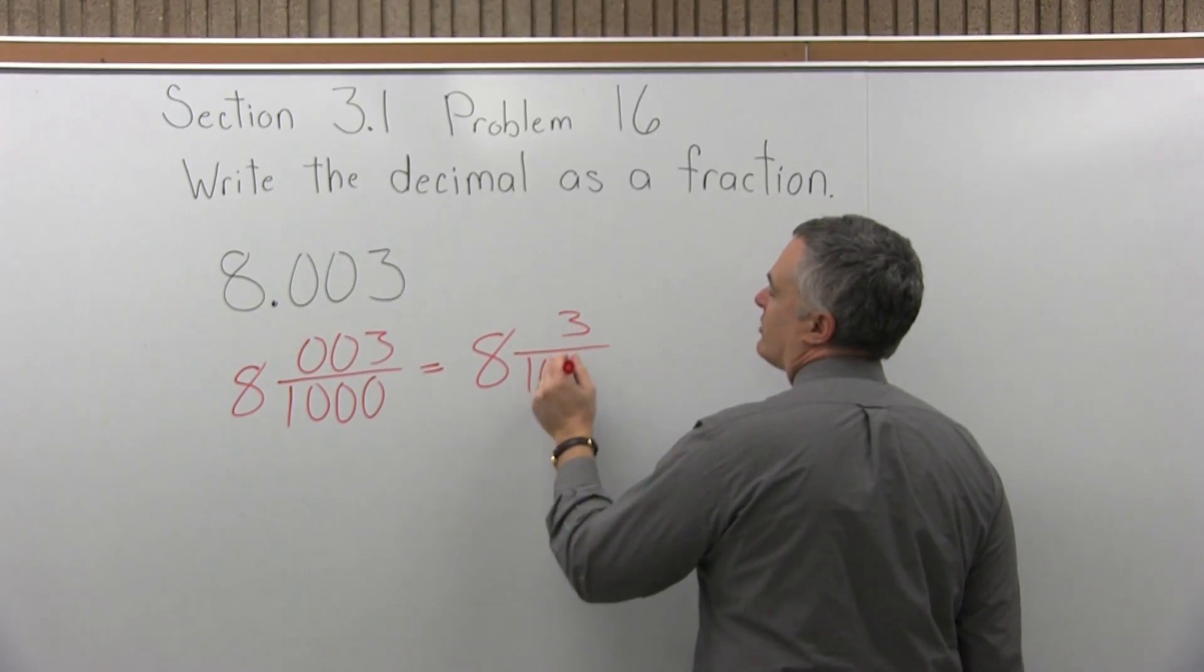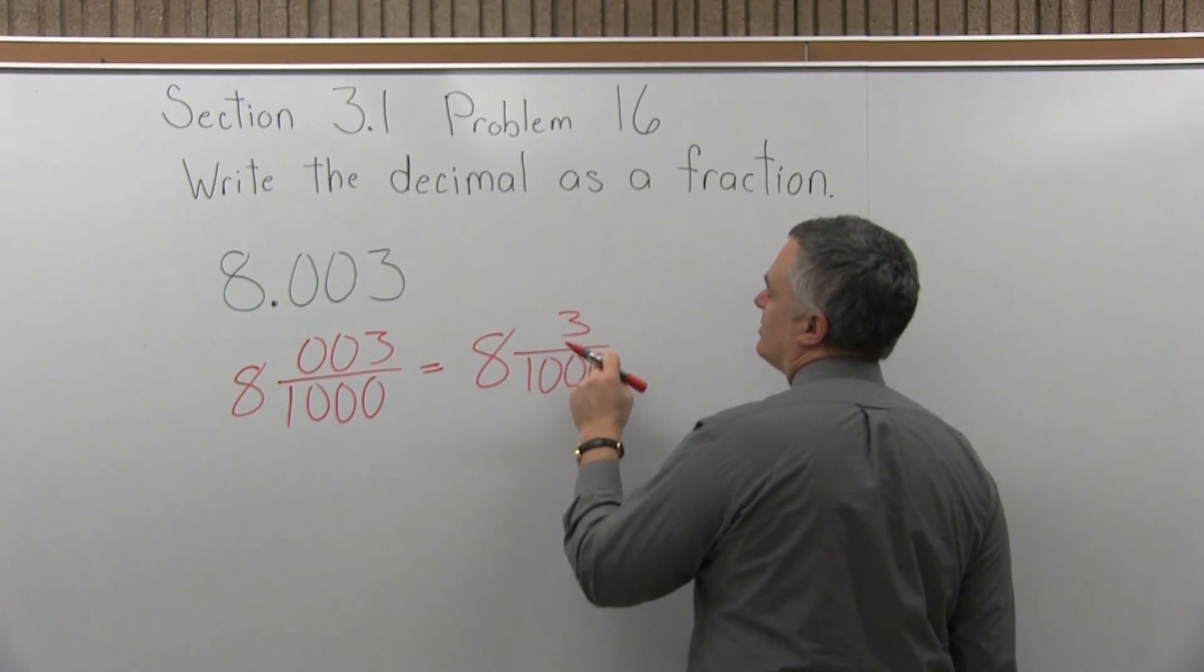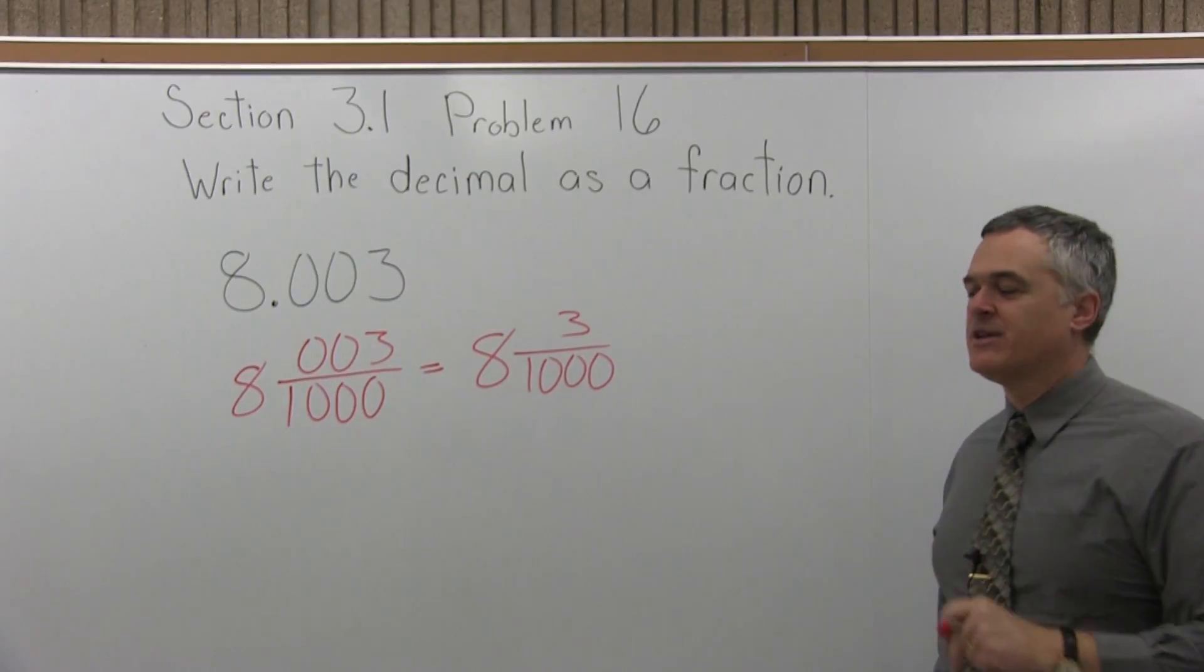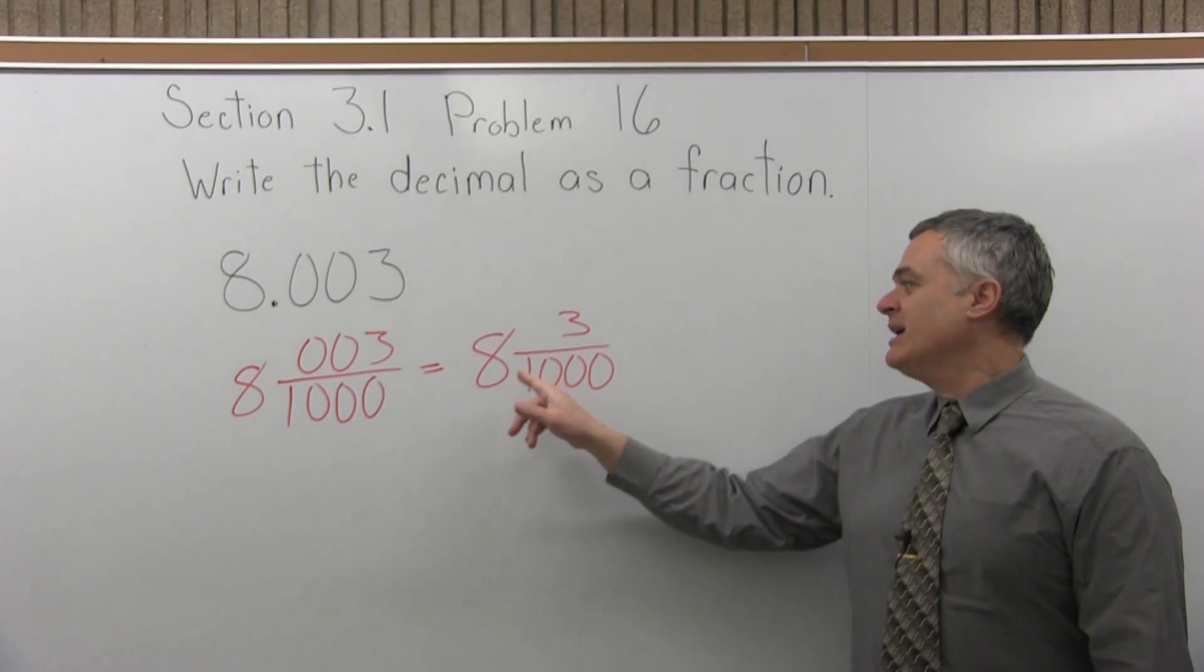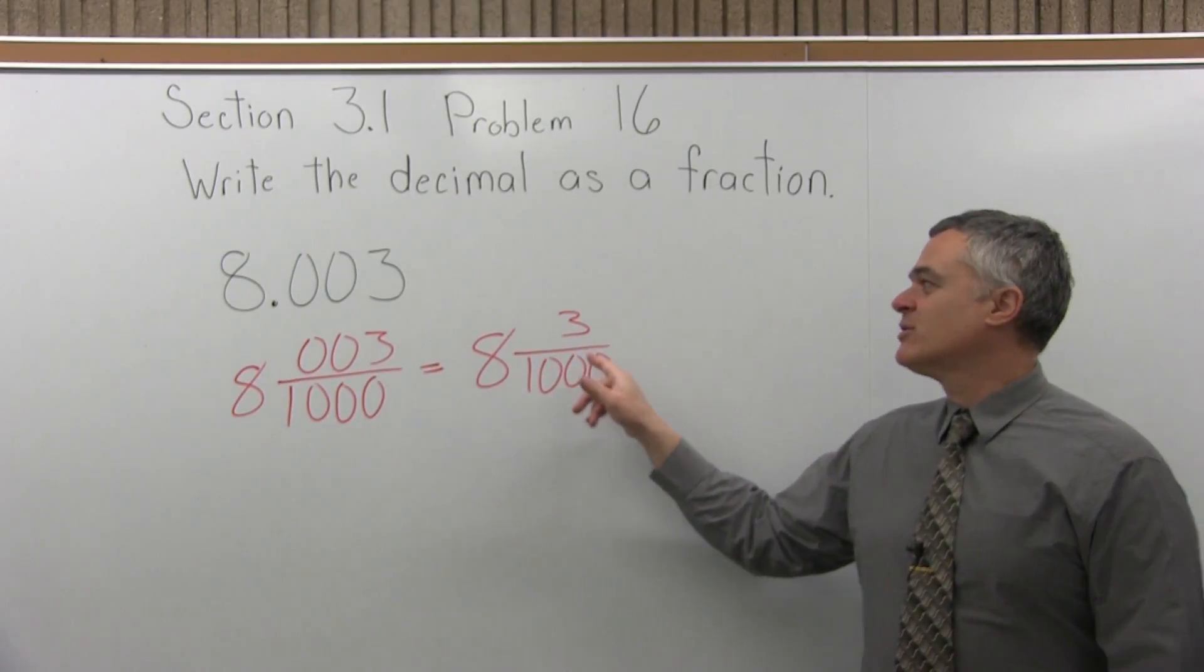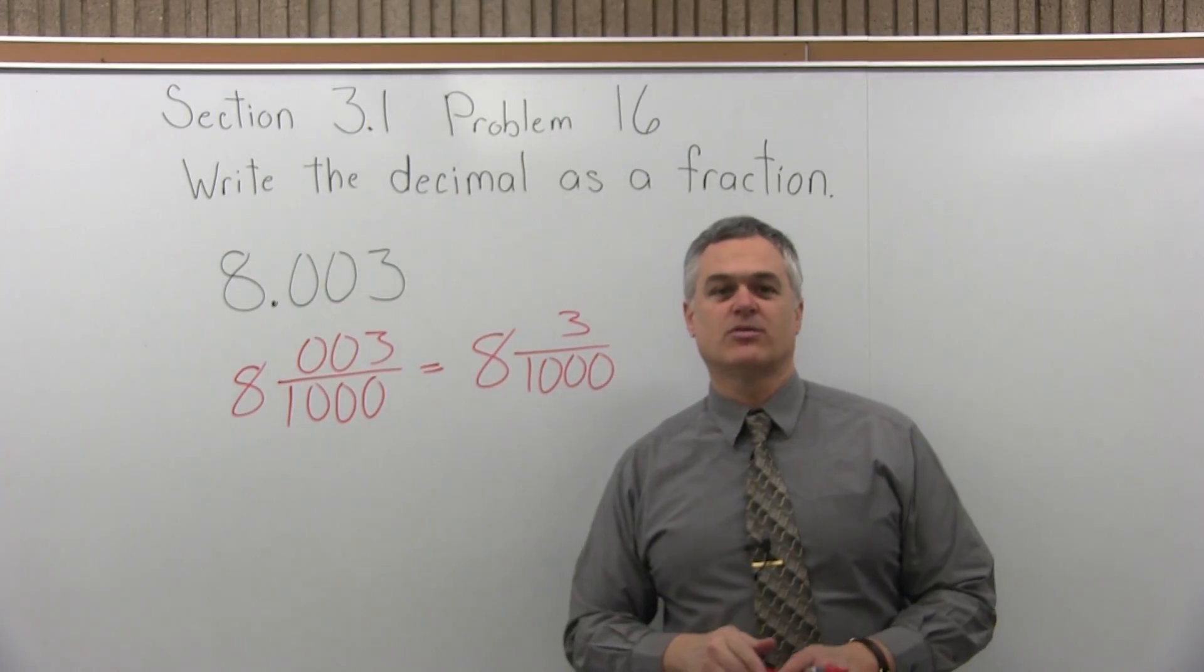It's 8 and 3 thousandths. Now the 3 and the 1,000 don't reduce. Nothing is going to divide into both 3 and 1,000 evenly. So at this point, we're done. 8 and 3 thousandths is the fraction equivalent of 8.003.